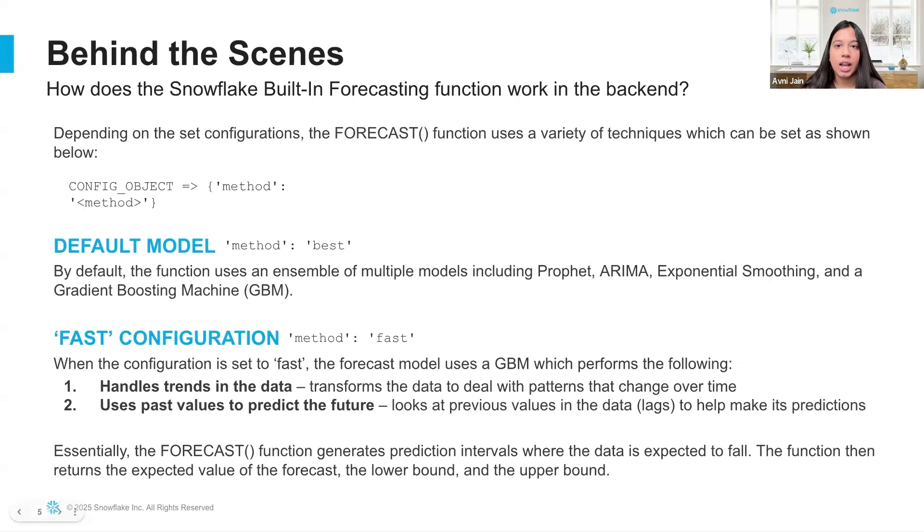The Snowflake built-in forecasting function uses a variety of techniques and you can actually include configurations to specify how the model should work. So by default, the model uses an ensemble method which includes Prophet, ARIMA, exponential smoothing, and a gradient boosting machine. This is known as the best model but it is also set by default so you don't need to configure it.